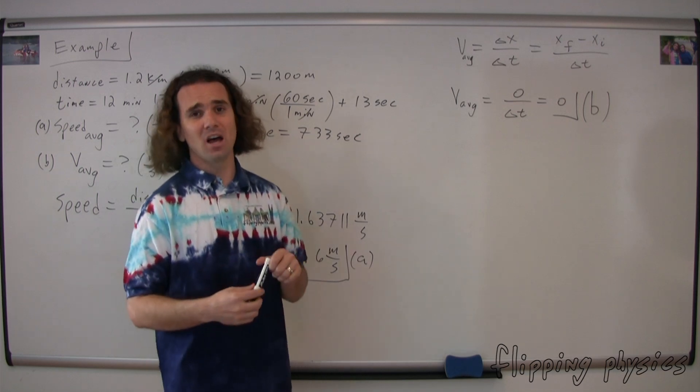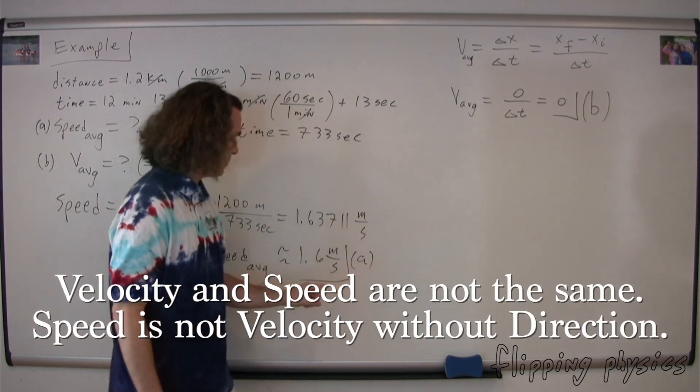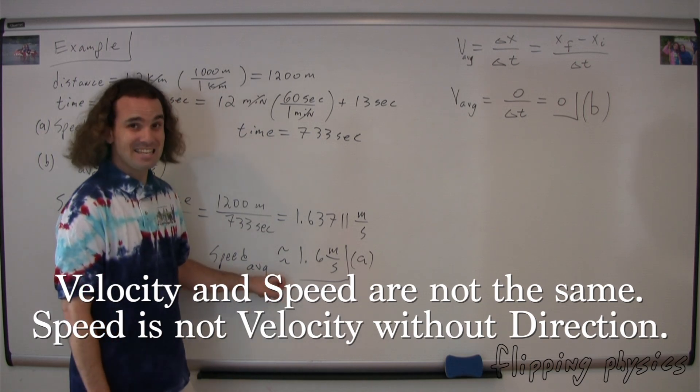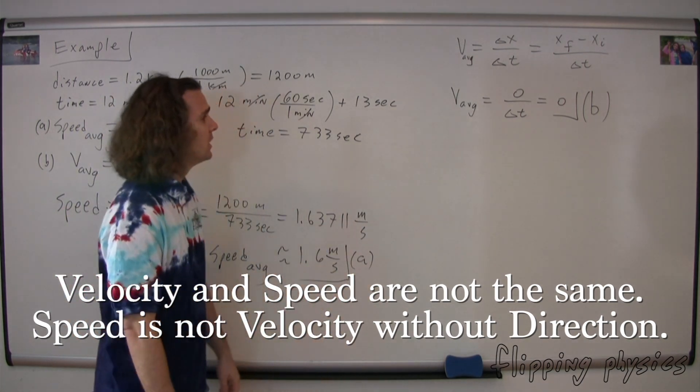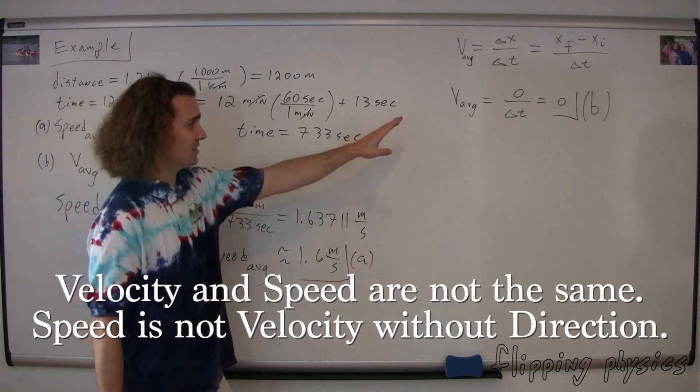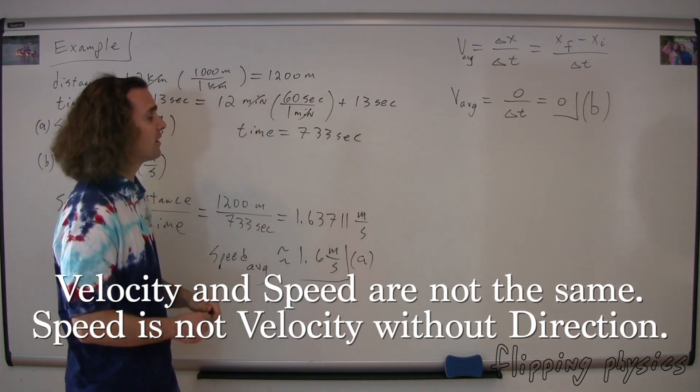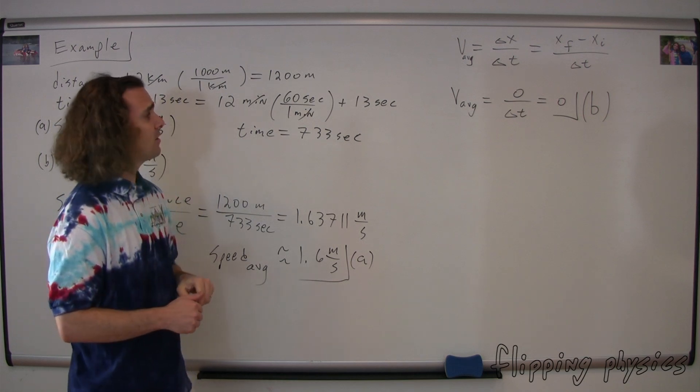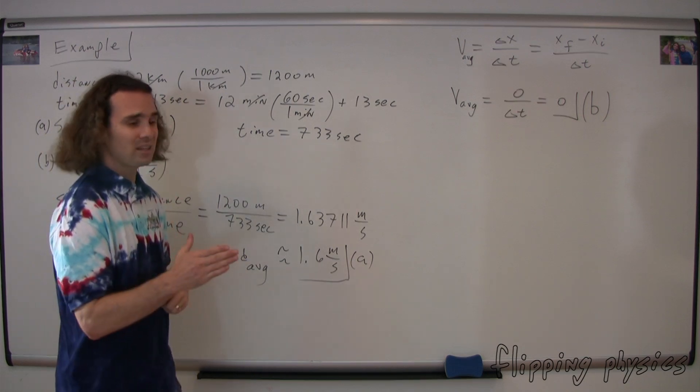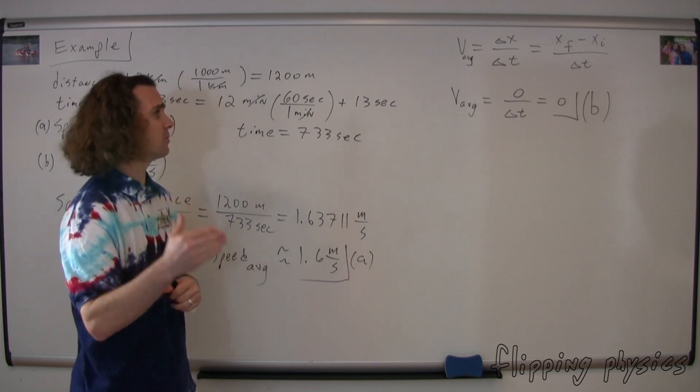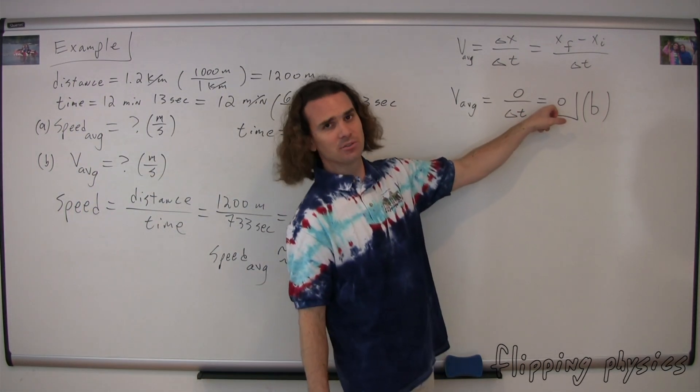This is the whole point of this example problem. The basic idea that velocity and speed are not the same and speed is not velocity without direction. Not true. In this particular example, the velocity was zero, the speed was 1.6 meters per second. You can see that those are two very different things. The reason for that was because Buster and I started and ended at the same point. The straight line distance from the initial to the final points was equal to zero. Therefore, the displacement was equal to zero. Therefore, the average velocity was equal to zero. However, we did travel. Therefore, our distance traveled was not zero. Therefore, our average speed was not zero.